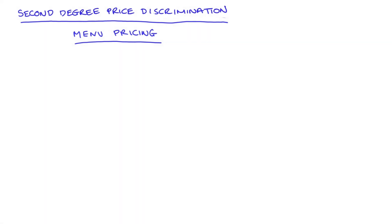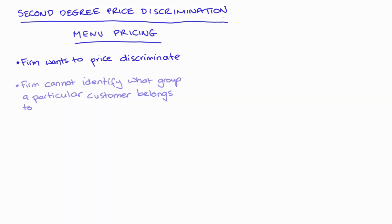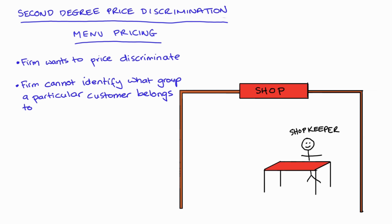Second degree price discrimination, when we talk about it as menu pricing, is a strategy that a firm will employ when it wants to price discriminate. The firm knows that there are different sorts of consumers in their market, and that means there's the potential to get more profit by discriminating between these types of customer. But the firm can't directly identify which group a particular customer belongs to. For instance, if I had a shop, when my customers walk in I can't tell what sort of customer they are, but I know they come in different types and I would like to discriminate between them.